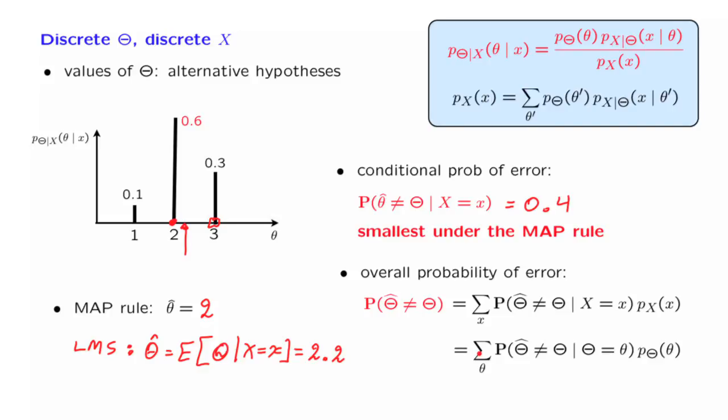Finally, I would like to make an important observation. We argued that for any particular choice of an observation, the MAP rule achieves the smallest possible probability of error. So under the MAP rule, this term is as small as possible for any given value of the random variable capital X. Since each term of this sum is as small as possible under the MAP rule, it means that the overall sum will also be as small as possible. And this means that the overall probability of error is also smallest under the MAP rule. In this sense, the MAP rule is the optimal way of coming up with estimates in the hypothesis testing context, where we want to minimize the probability of error.